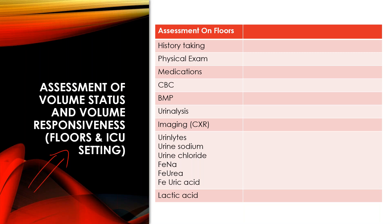First, take a detailed history with focus on intake and output. Especially in older patients, ask about input — are they drinking enough water, because elderly patients sometimes don't drink adequately. Ask about output: history of vomiting, diarrhea, polyuria, bleeding, GI bleed. Also ask whether they are taking medications that can cause polyuria like diuretics.